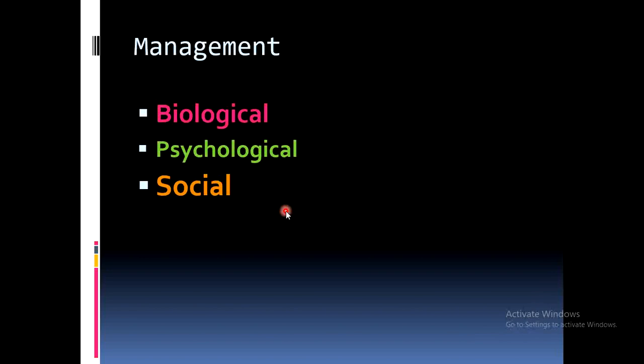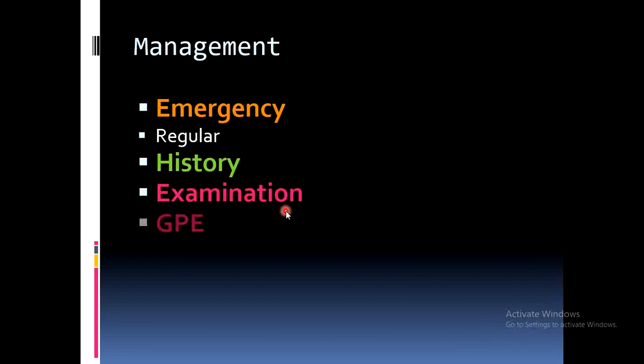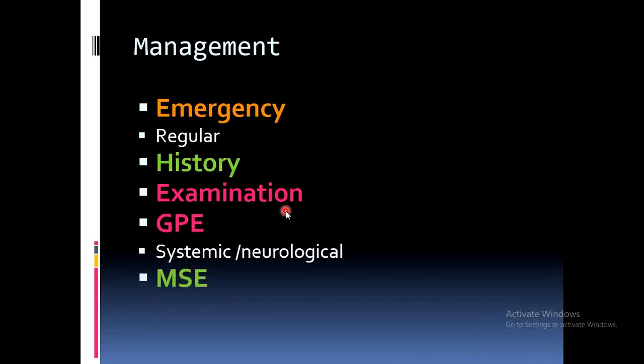Management follows the biopsychosocial model and includes biological, psychological, and social approaches. Emergency management begins with thorough history-taking and examination: general physical examination, systemic and urological examinations, and mental state examination. The physical examination is done first to rule out physical illnesses before arriving at a psychiatric diagnosis — this is the hierarchy of diagnosis. Investigations include biological, psychological, and social assessments.